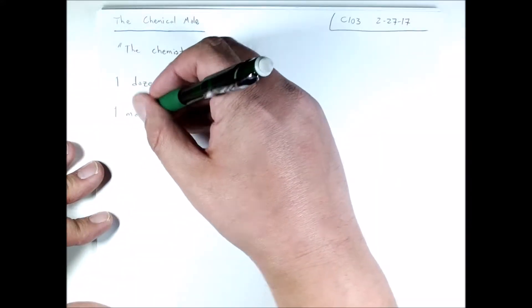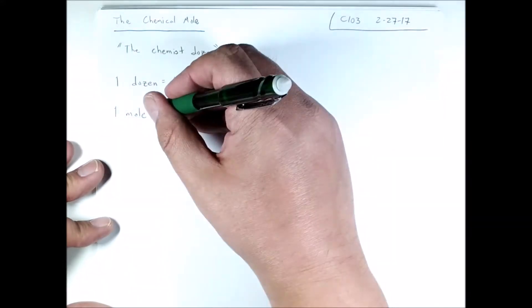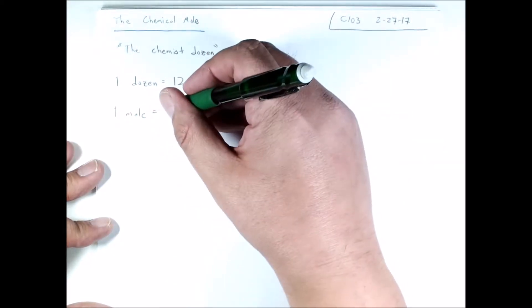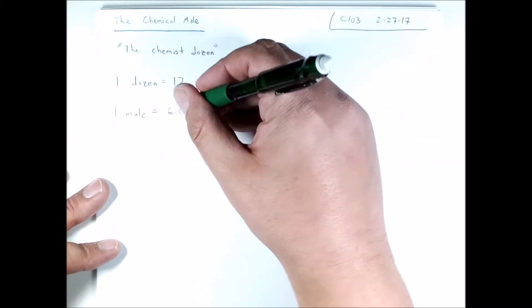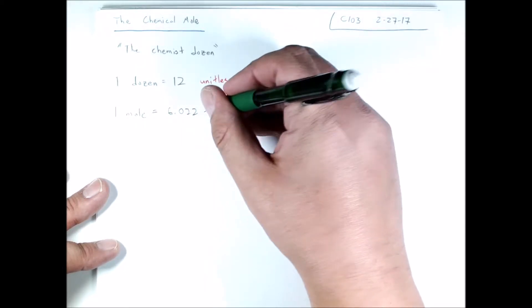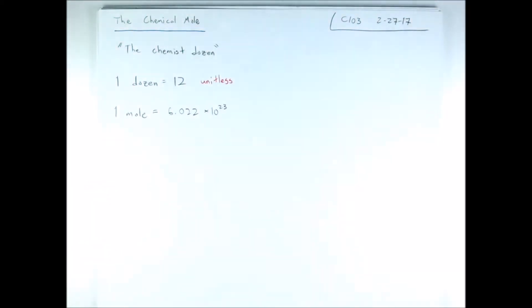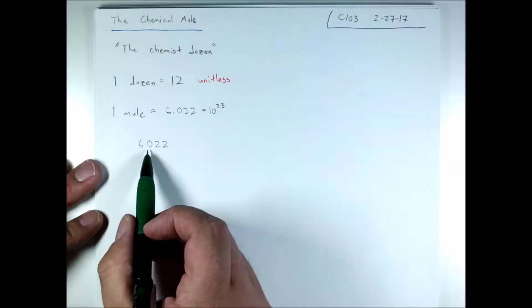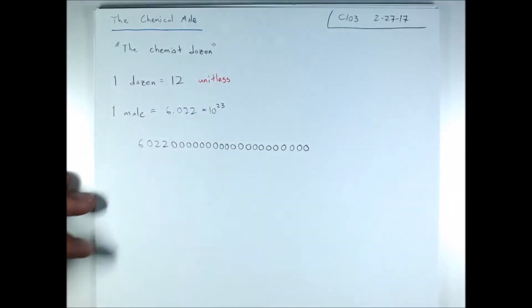One mole is equal to a very large number, and you should commit this to memory: 6.022 times 10 to the 23rd. It is a very large number.